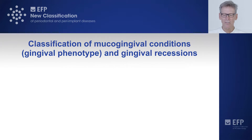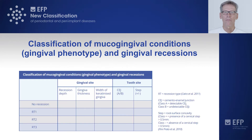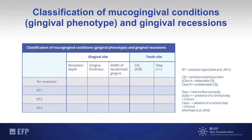For the classification of mucogingival conditions — the gingival phenotype and gingival recessions — we developed this matrix to organize it in a structured way. Two factors are taken into consideration: the gingival side and the tooth side. On the gingival side, we look at recession depth, thickness of the gingiva, and width of the keratinized tissues. On the tooth side, we look at the CEJ — whether it is visible or not — and whether there is a step or concavity on the root surface. When it comes to the actual recession, we adopted the established system developed by Cairo et al. in 2011, classifying recessions into three groups: recession type 1, type 2, and type 3.